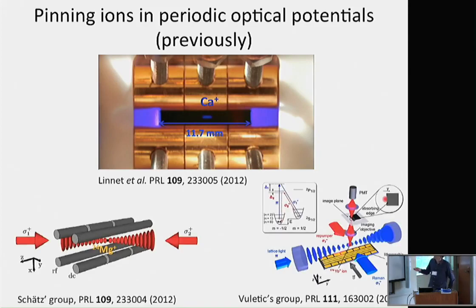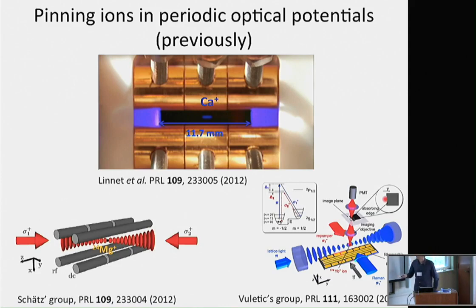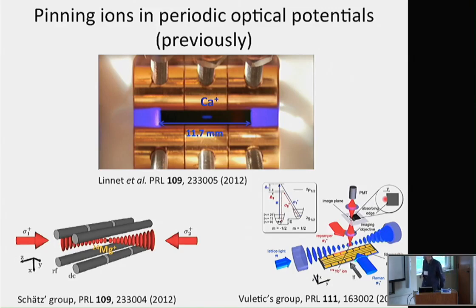At the same time, very similar experiments were done by the group of Tobias Schatz with a freestanding lattice and magnesium ions, and also by Evan Wuletic with barium ions and the structured trap that Tracy mentioned.